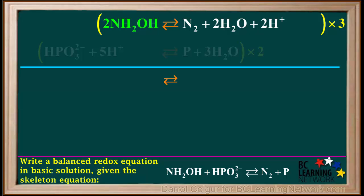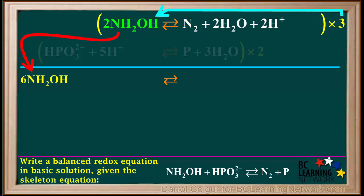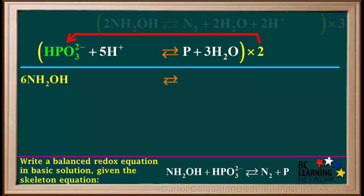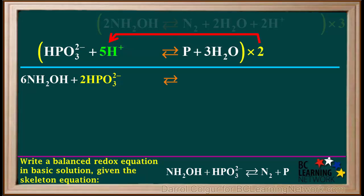Starting on the top left, we have three times two NH2OH, which gives us six NH2OH. And on the bottom left, we have two times HPO3(2-), which we will add here. And two times 5H+, which equals 10H+.